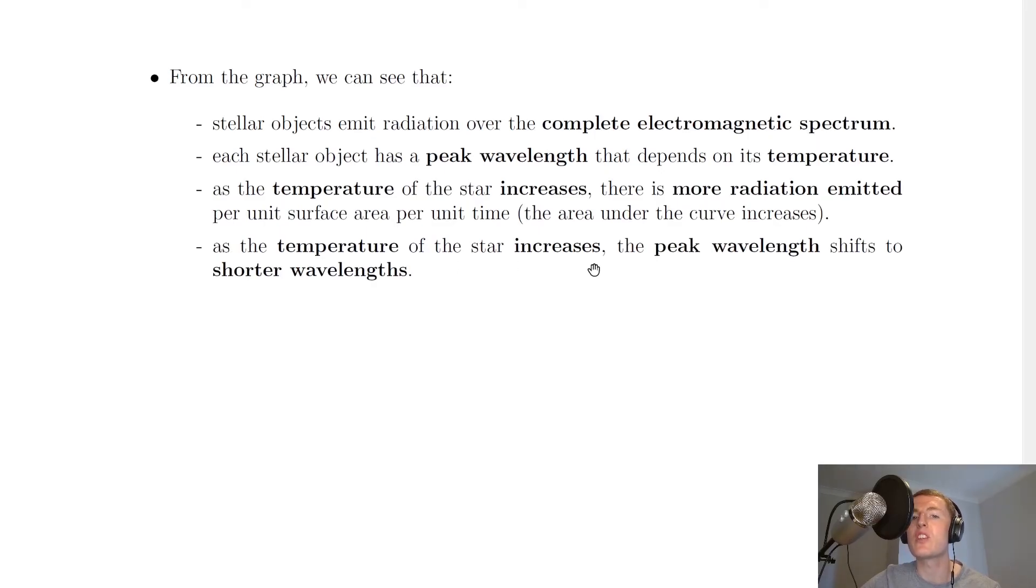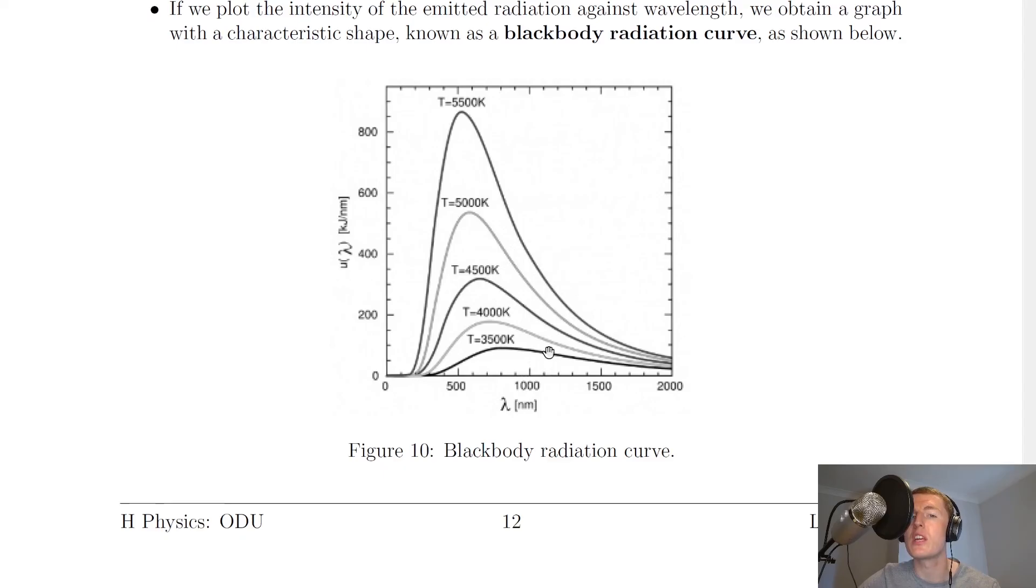And lastly, it says that as the temperature of the star increases, the peak wavelength shifts to shorter wavelengths. So if you look here, if we were to put a little dot or a cross on the peak of the curve, there, there, there, there, and there, we would actually be moving and shifting towards the left, which is actually going to a lower wavelength. So for stars of increasing temperature, we're tending towards a lower wavelength for the peak wavelength.